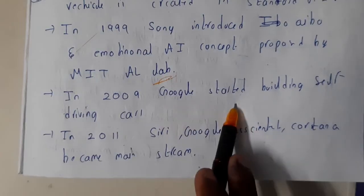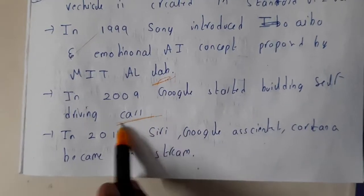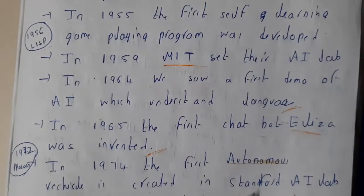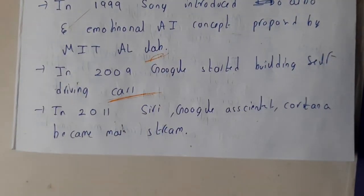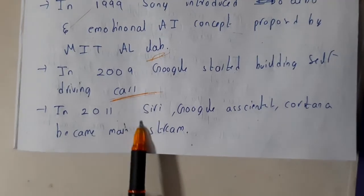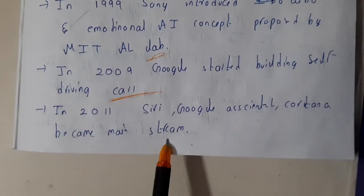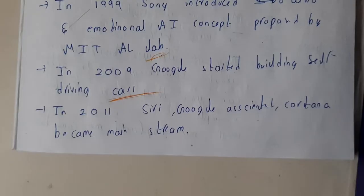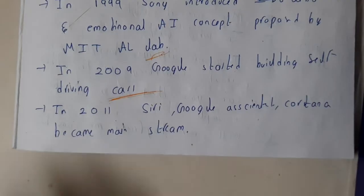In 2009, Google started building its self-driving cars — note how the concept was introduced back in 1965 but implementation came in 2009. In 2011, Siri, Google Assistant, Cortana, and many other chatbots came into play. The chatbot concept belongs to natural language processing, which we'll be discussing later.